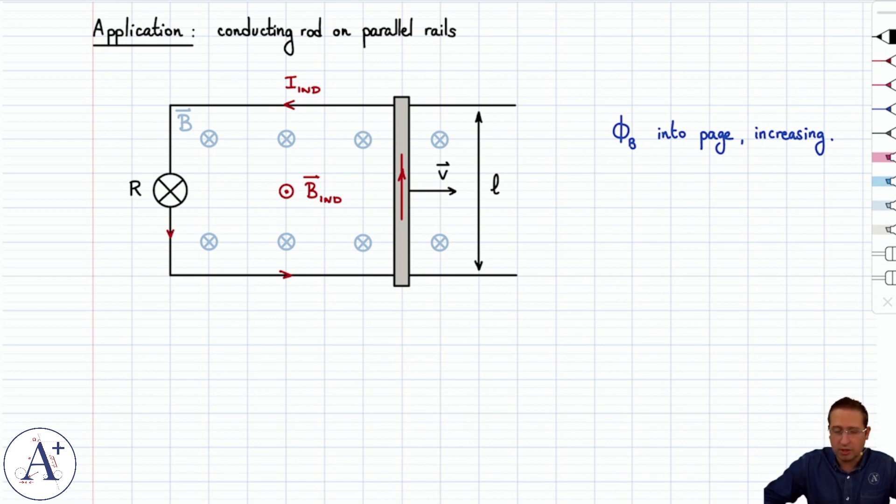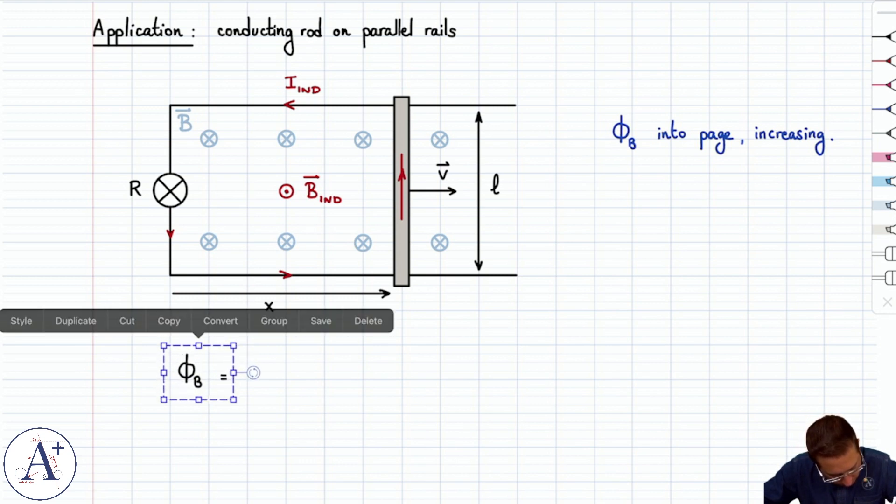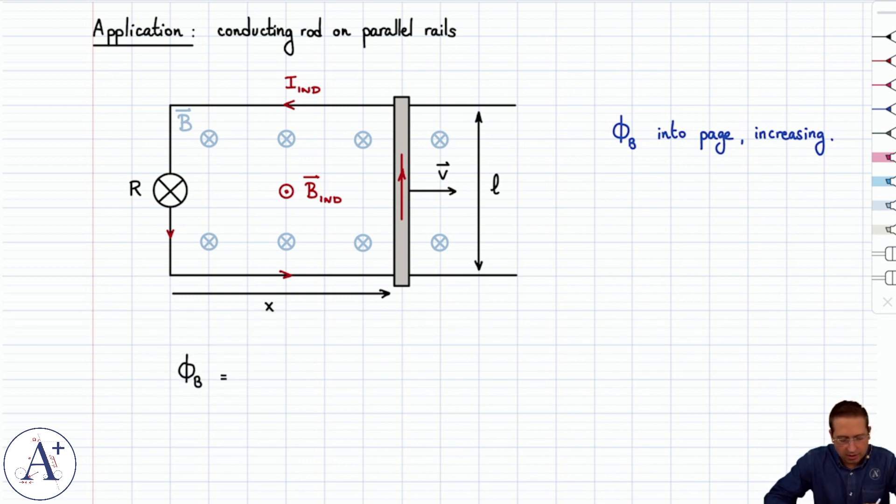Now, we know that Faraday's law is always our starting point, and we have to get epsilon-induced first. And then we're going to see how we go from epsilon-induced to I-induced. So first things first, let's evaluate the flux itself. We need to compute the flux through this area here. And we have a uniform magnetic field. It's going to be pretty straightforward, but we do need one more dimension for this rectangular area. Let's call this x because it increases as the rod moves to the right, and so x seems like a good name for this.